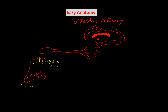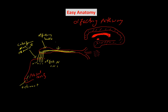The olfactory nerve fibers pass through the roof of the nasal cavity through the cribriform plate of the ethmoid bone. They then join cells in the olfactory bulb, located at the base of the brain. These cells — mitral cells, granular cells, and others — represent the end of the first order neuron and the beginning of the second order neuron. The second order neuron travels through the olfactory tract, also located at the base of the brain.